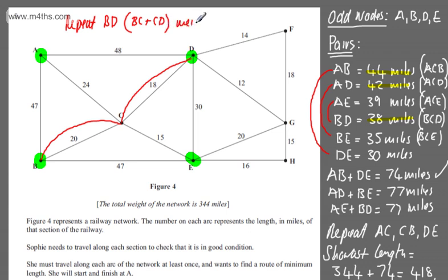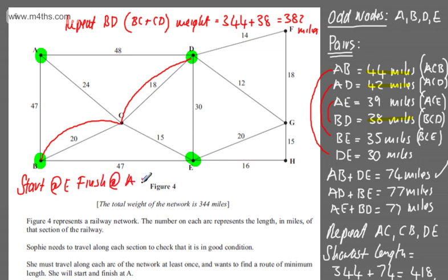The weight, so the weight now is going to be equal to the 344. So let's put the 344 plus now the 38. So all I'm going to be doing is adding that on. And what does that give me? 382. Let's just check that. That's 382 miles. So 382 miles. I'm going to state now, start at E, finish A. So start at E, finish at A. Now, and I'm going to put my justification, now semi-Eulerian. So now semi-Eulerian or semi-traversable.